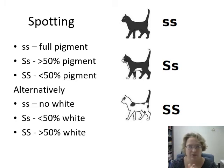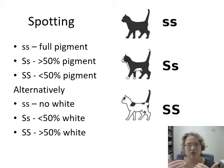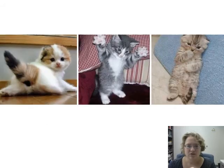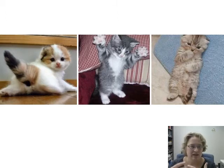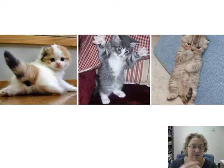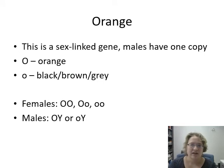Once you get to two copies of the white spotting allele, the majority of the cat is white — over 50 percent — though it still has some pigment somewhere. Do your best guess: if it's under 50% or over 50% white. For example, on the left we've got a calico with little spots of color but mostly white, so that's homozygous dominant SS. In the middle, a tabby with some white on the tummy — a little bit of white spotting, so heterozygous. On the right, a fully pigmented cat with no white spots, which is homozygous recessive.